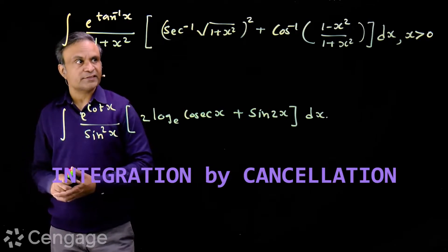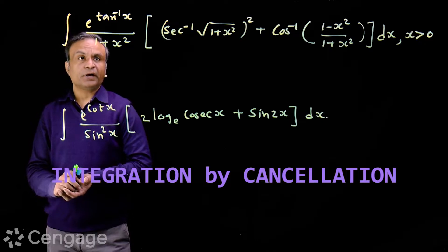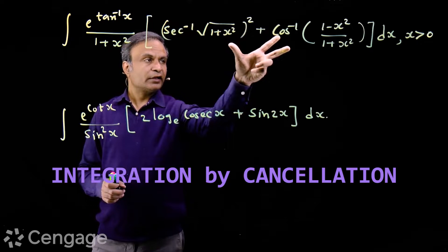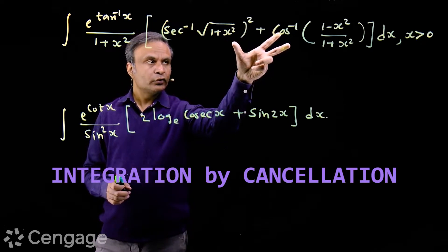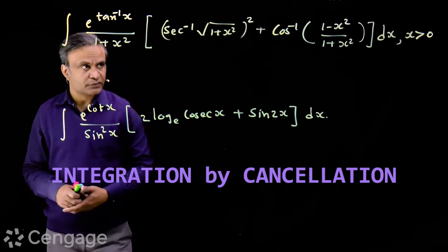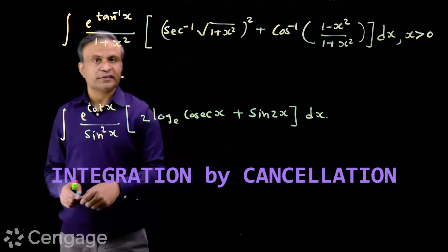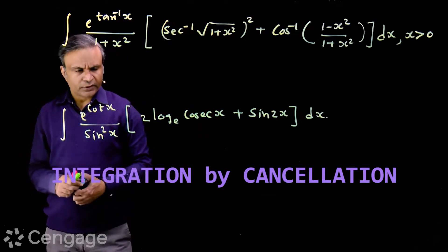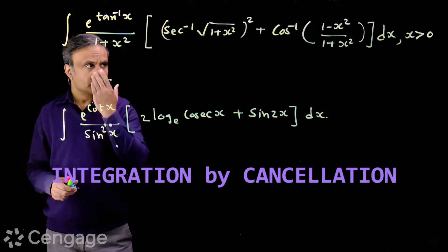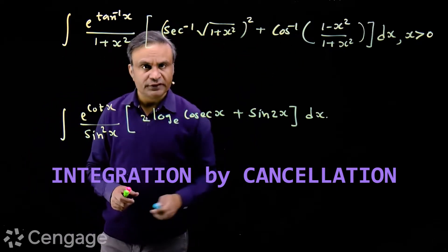We have two more questions. The first one: the integrand is e^(tan⁻¹x) over (1 + x²), multiplied by an expression inside brackets. Here we have two inverse trigonometric functions: the square of sec⁻¹(√(1+x²)) plus cos⁻¹((1−x²)/(1+x²)). We will be using some formulas of inverse trigonometric functions to simplify these two functions.